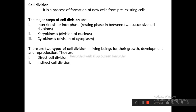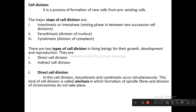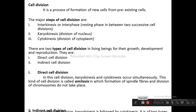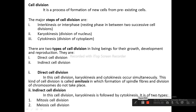The two types are direct cell division and indirect cell division. In direct cell division, karyokinesis and cytokinesis occur simultaneously; this kind of cell division is called amitosis, in which formation of spindle fibers and division of chromosomes do not take place. In indirect cell division, karyokinesis is followed by cytokinesis. It is of two types: mitosis cell division and meiosis cell division.